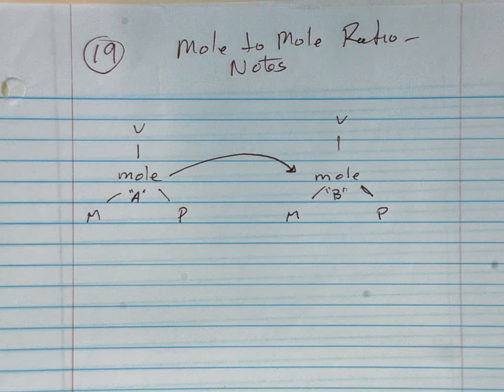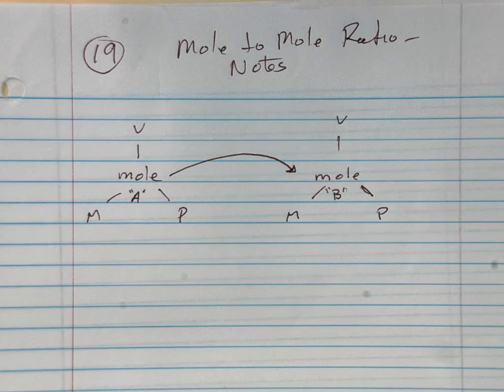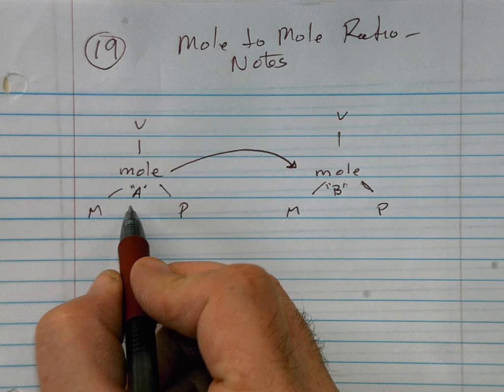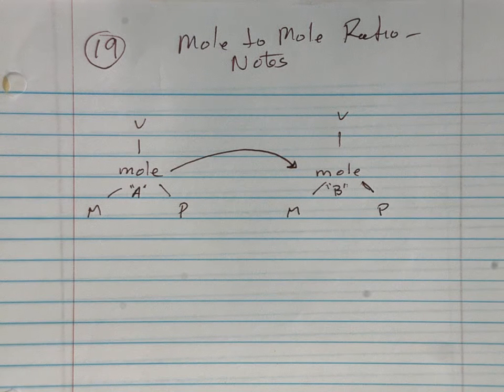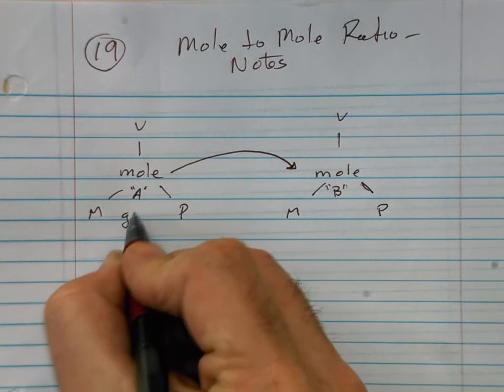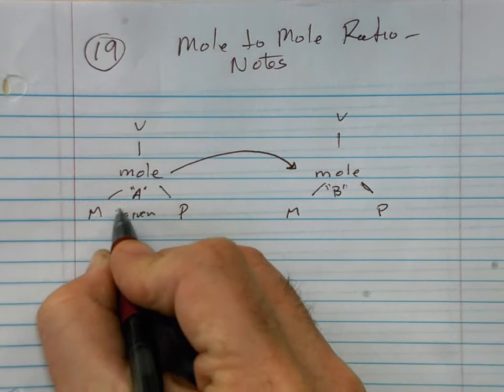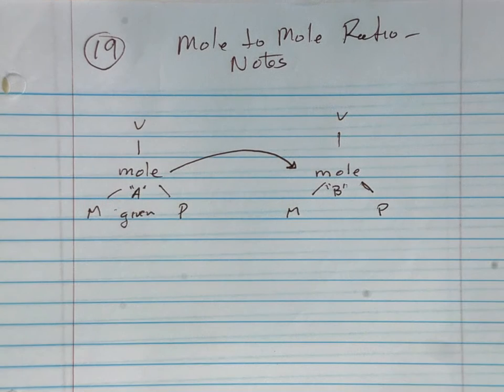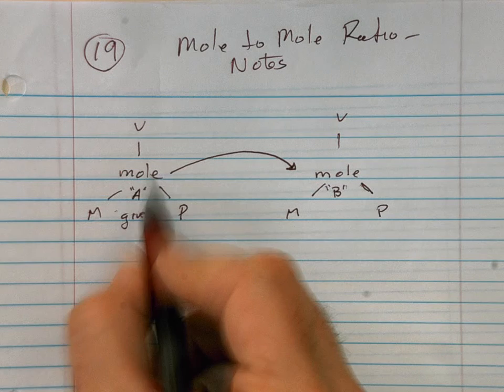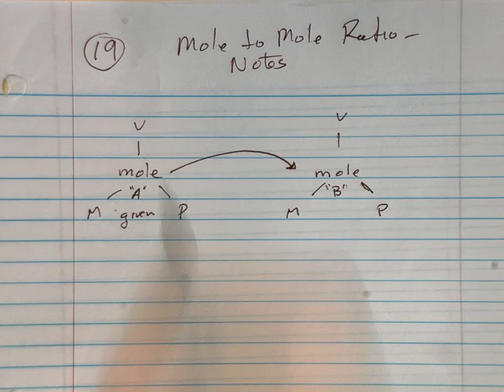When we're working these problems, this triangle is going to be for the given. So if the problem says you have 36 liters of CO2, we're going to start on this side. CO2 will be our compound A, the given.